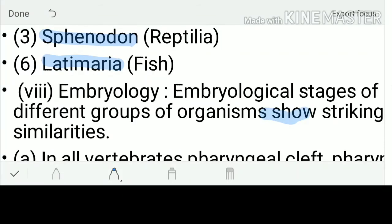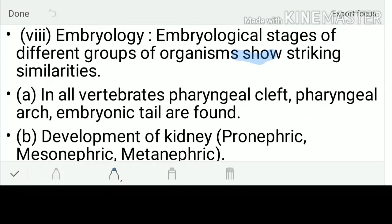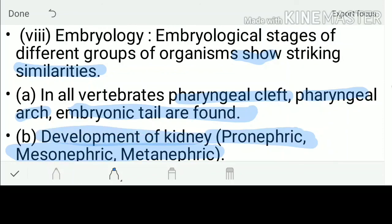Evidence from Embryology: embryological stages of different groups of organisms show striking similarities. All organisms have pharyngeal arches, and embryonic tails are found in embryonic conditions. The development of the kidney — pronephric, mesonephric, and metanephric — shows shared origin but evolved into three different types, all supporting the theory of evolution. Hopefully this lecture is beneficial for you. Thank you very much.